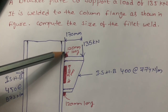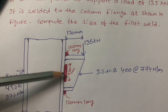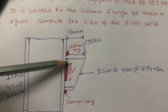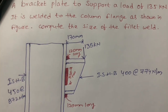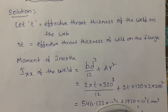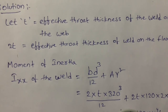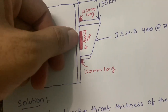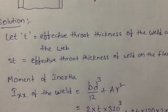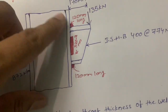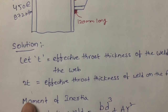We are going to find out the weld size. This is the flange portion — these two are called flanges and this one is the web. We are going to calculate the size of the fillet weld. Let small t be the effective throat thickness of the weld on the web, and 2t be the effective throat thickness of the weld on the flange.